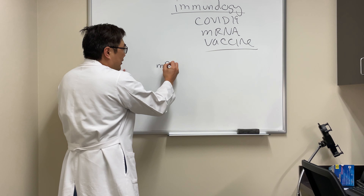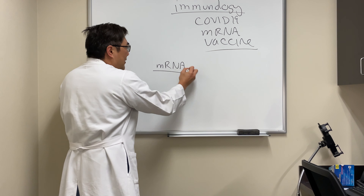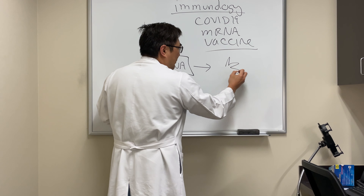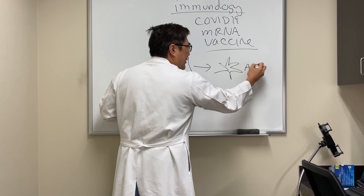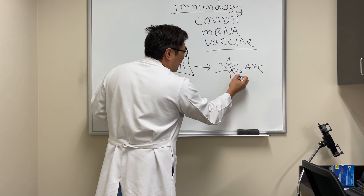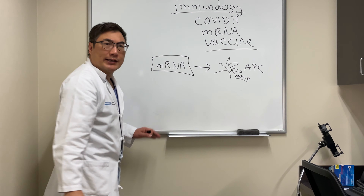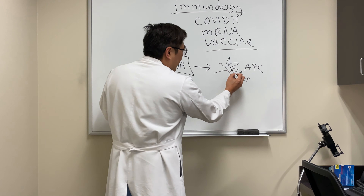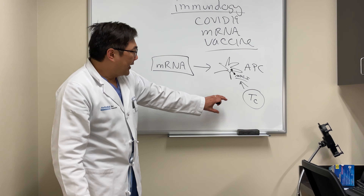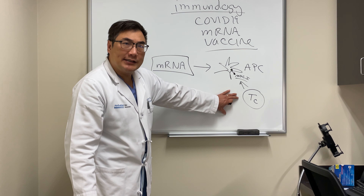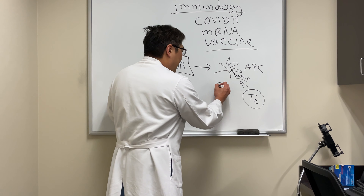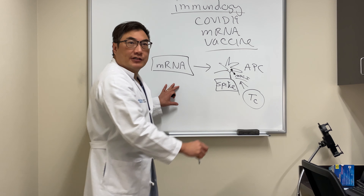The innovation is that mRNA is injected as the vaccine. An APC — antigen-presenting cell — will pick up this mRNA and package it. Then a MHC, major histocompatibility complex one, antigen will be produced for the surface, and a cytotoxic T-cell will see that. That cytotoxic T-cell mechanism is one of the ways this vaccine works, because the target is the spike protein on the SARS-CoV-2.